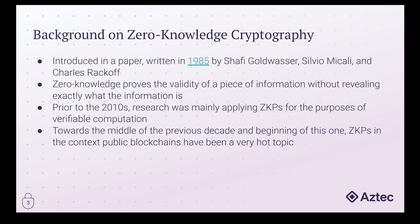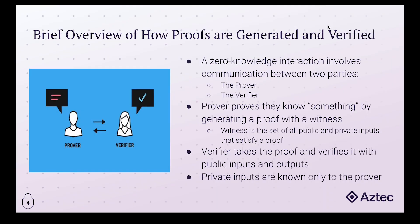We're going to move on to explaining how zero-knowledge proofs work. This is going to be a surface-level view — we won't get too in-depth because it can get quite complicated. We'll provide some links at the bottom for those looking to dive further into this topic. For this video series, all we need to know is that a zero-knowledge interaction involves two parties: a prover and a verifier.